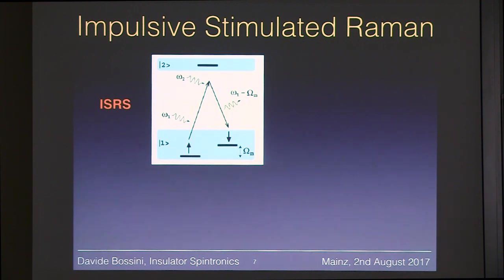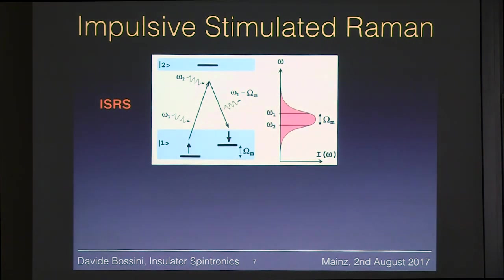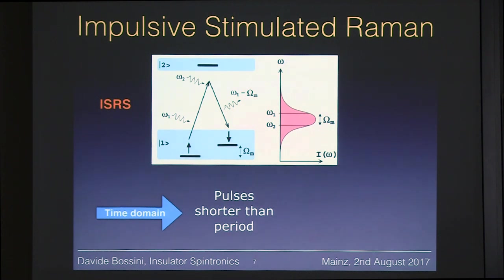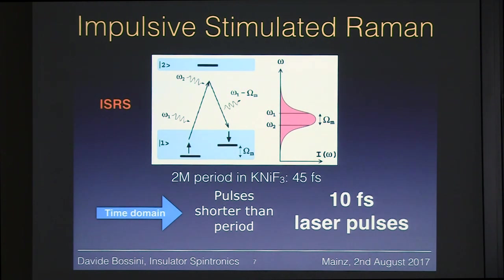All our experiments are done with femtosecond laser pulses. These pulses, by being ultrashort, are naturally broadband — so broadband that the two frequencies ω₁ and ω₂ are contained in a single laser pulse. To excite a mode, the laser pulse must be shorter than the period of the mode. The period of the two-magnon mode is 45 femtoseconds, so we need 10-femtosecond laser pulses. Going from 100 fs (fully commercial equipment) to 10 fs requires rather complicated custom-built systems.